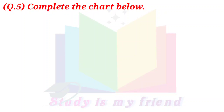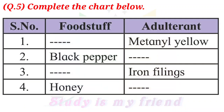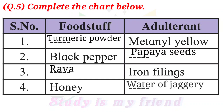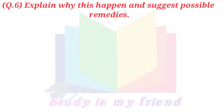Question 5: Complete the chart below. Answer: 1. Foodstuff - turmeric powder; Adulterant - metanil yellow. 2. Foodstuff - black pepper; Adulterant - papaya seeds. 3. Foodstuff - rawa; Adulterant - iron fillings. 4. Foodstuff - honey; Adulterant - water or jaggery.